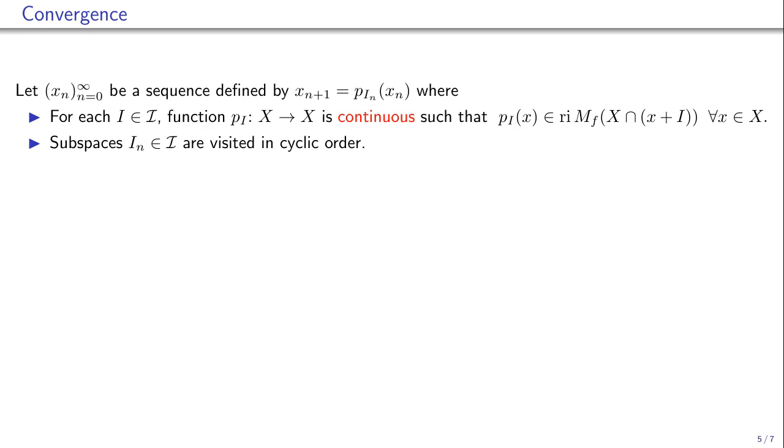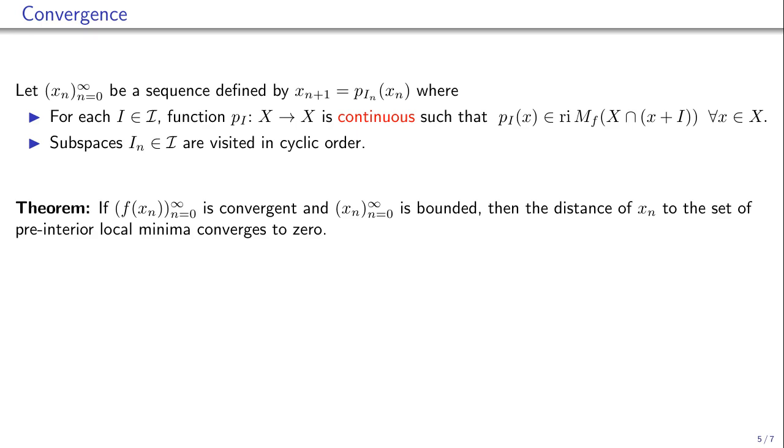We show that if the function values converge and the sequence of arguments is bounded, then the distance of the arguments to the set of pre-interior local minima converges to zero.